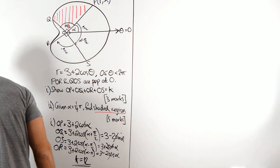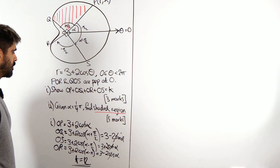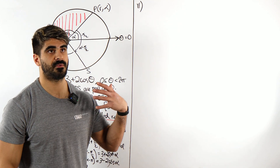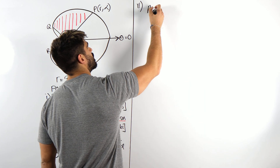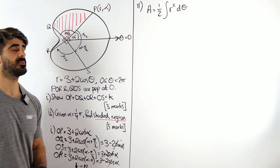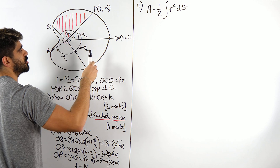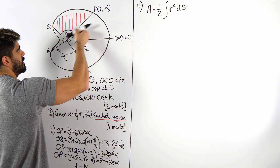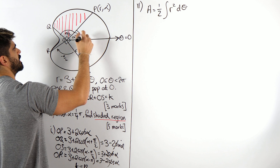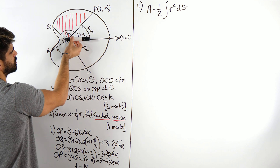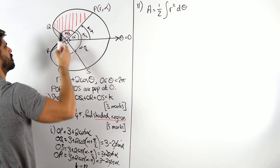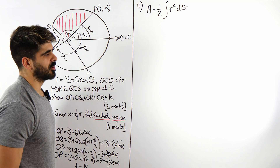That was more stressful than anticipated. For part B, given that alpha is pi over 4, find the shaded region. The area in polar is a half integral of r squared d theta. We sum around the pole rotating anti-clockwise. Since alpha is pi over 4, we integrate starting at pi over 4 all the way to pi over 4 plus pi over 2, which is 3 pi over 4. So limits are pi over 4 to 3 pi over 4.